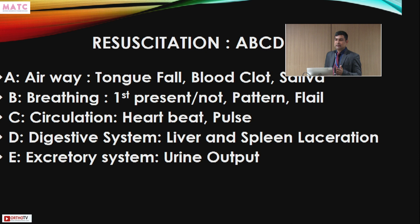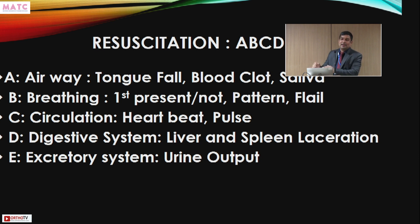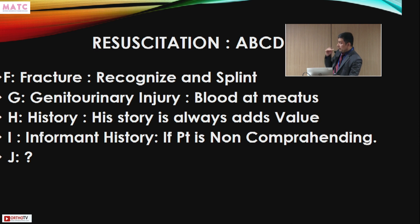Circulation involves checking the pulse, heartbeat, and abdominal organs — particularly liver and spleen lacerations, which are life-threatening and must be cleared before the patient comes to orthopedics. The excretory system — urine output — is also critical: good urine output indicates stable blood pressure. After these are assessed, we recognize and splint fractures.